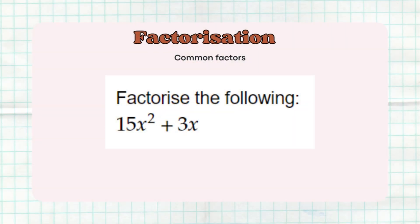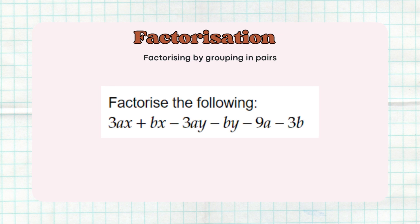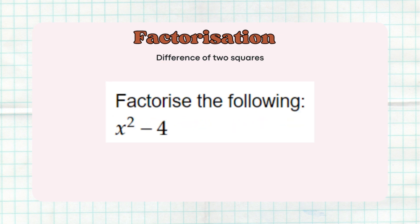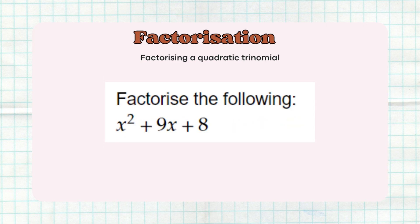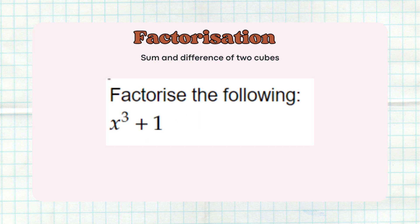Now we're going to move to factorization. Factorization is basically the reverse of products. The methods you need to know are: finding the common factor, factorizing by grouping pairs, difference of two squares, factorizing a quadratic trinomial, and lastly, sum and difference of cubes.